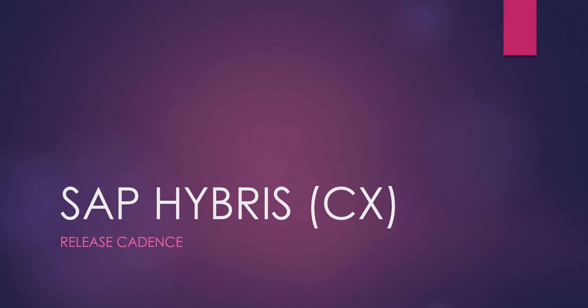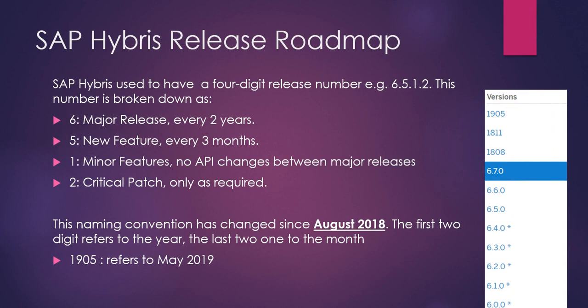SAP Hybris follows a numbered release cadence, which can be up to four digits long. For example, 6.5.1.2 breaks down as: 6 is the major release, roughly every two years; 5 is a new feature release, roughly every three months; 1 is for minor features with no API changes allowed between major releases; and 2 is for critical patches, issued only as required. This naming convention changed since August 2018 — the first two digits refer to the year and the last two to the month. For example, 1905 refers to May 2019.